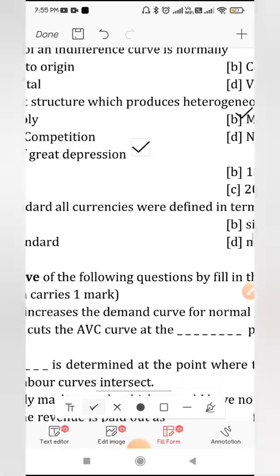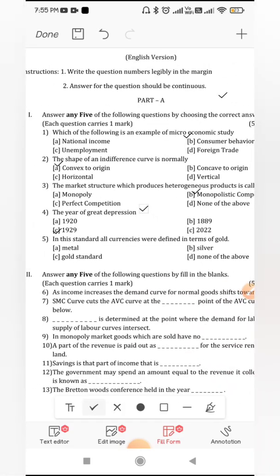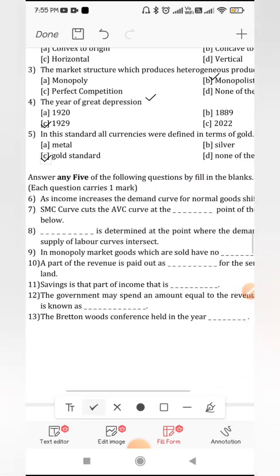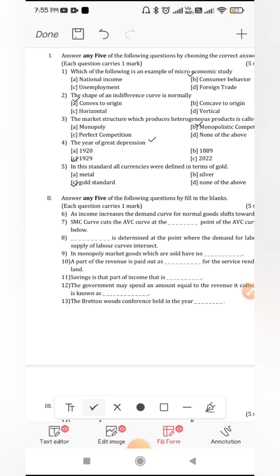We all know what is depression. After that, in this standard all currencies were defined in terms of gold, that is gold standard. It is very easy to understand whenever the word comes of the gold standard, the gold coming means gold standard is the answer.